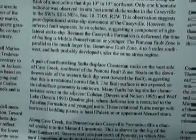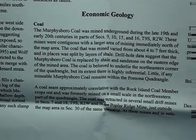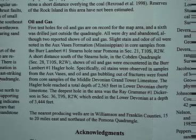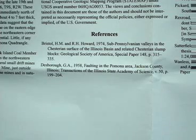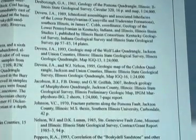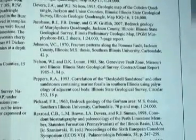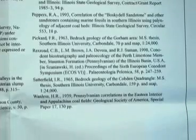Another important part of the text is the economic geology. Here we have coal in the area, which is of economic value, as well as oil and natural gas. We acknowledge people who have helped us or agencies such as the USGS. The most important part of the map is the references — those are other publications we used to make the map, and that's where we give credit to people who have done work in the area and whose results we've used.